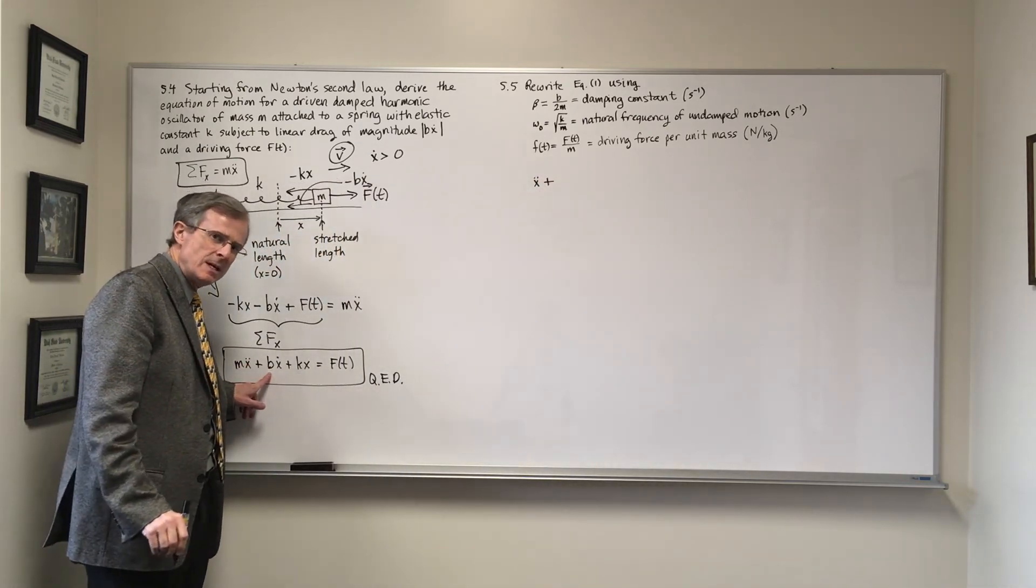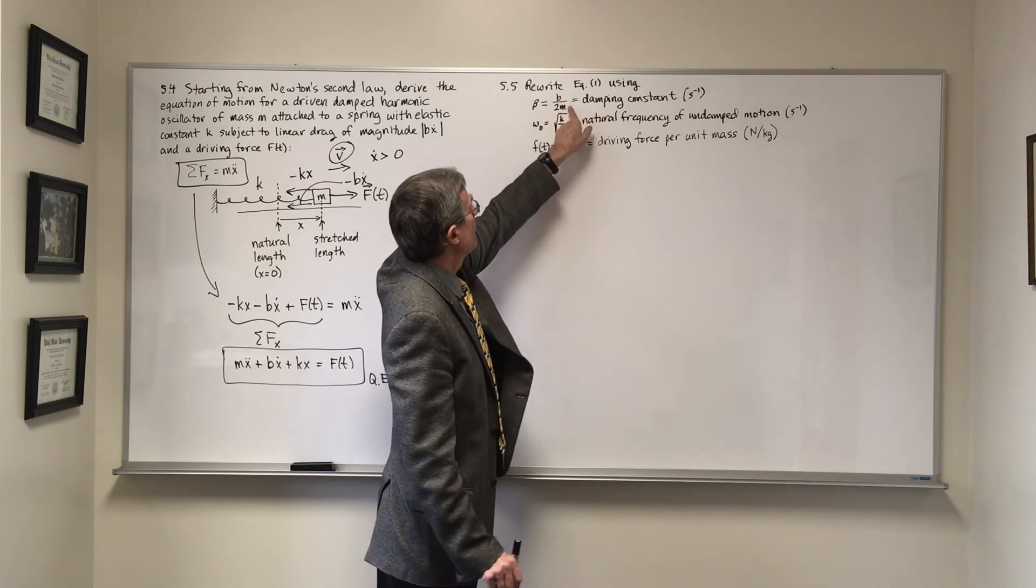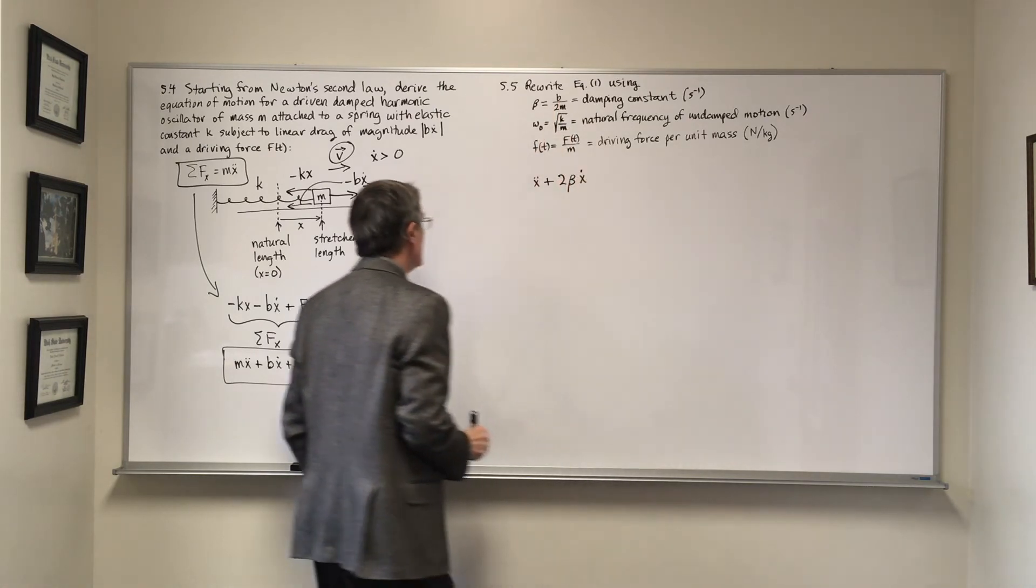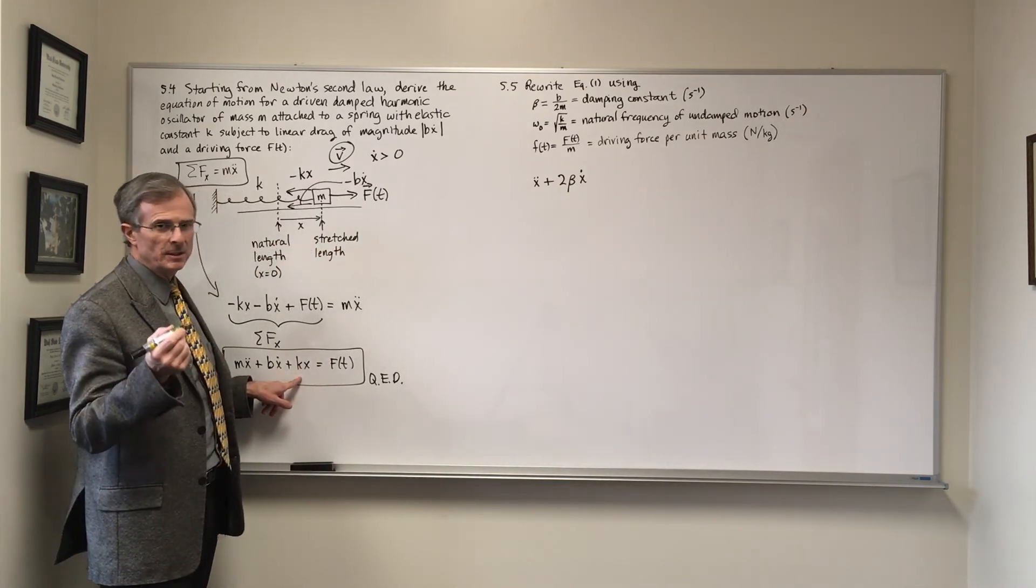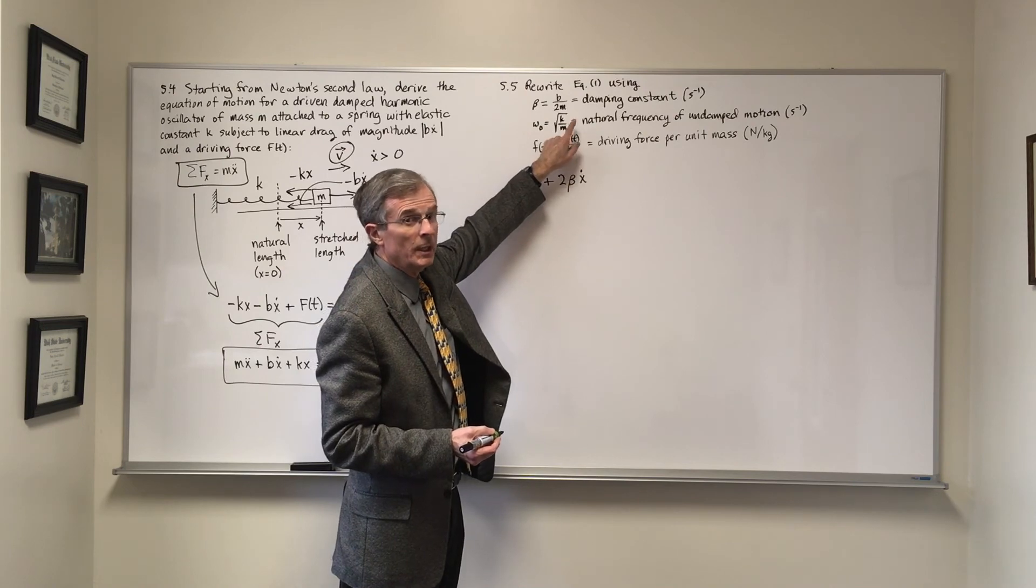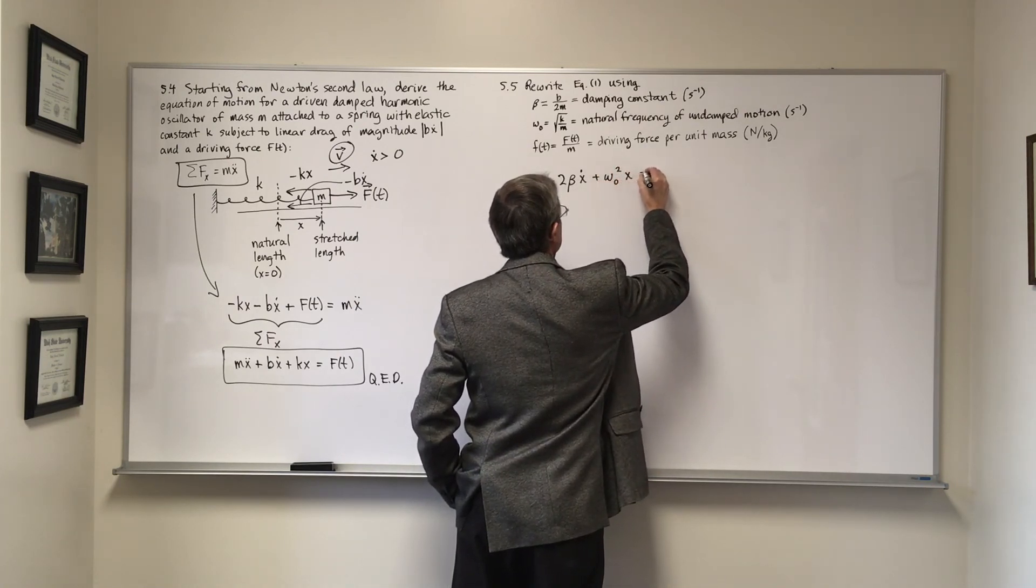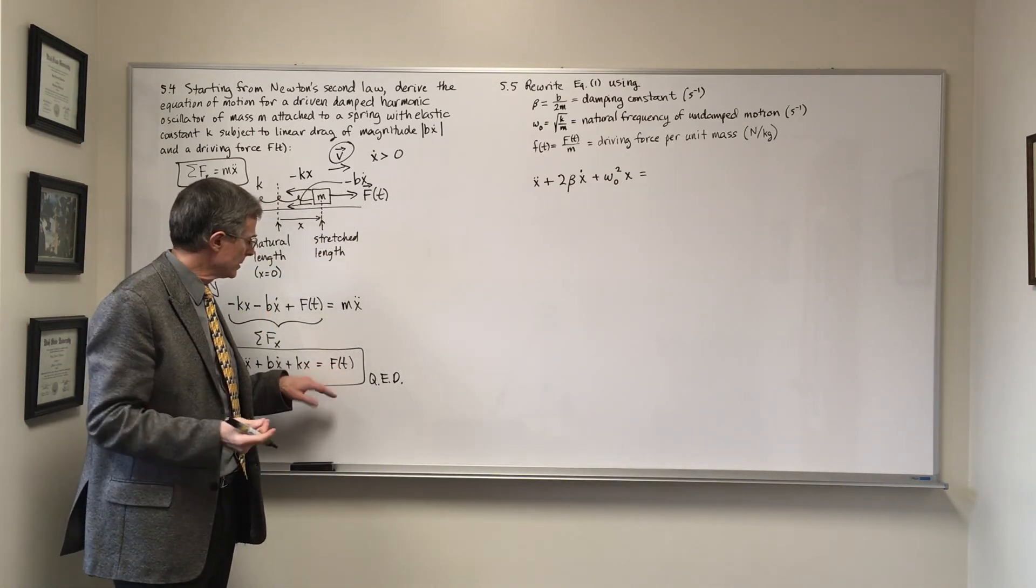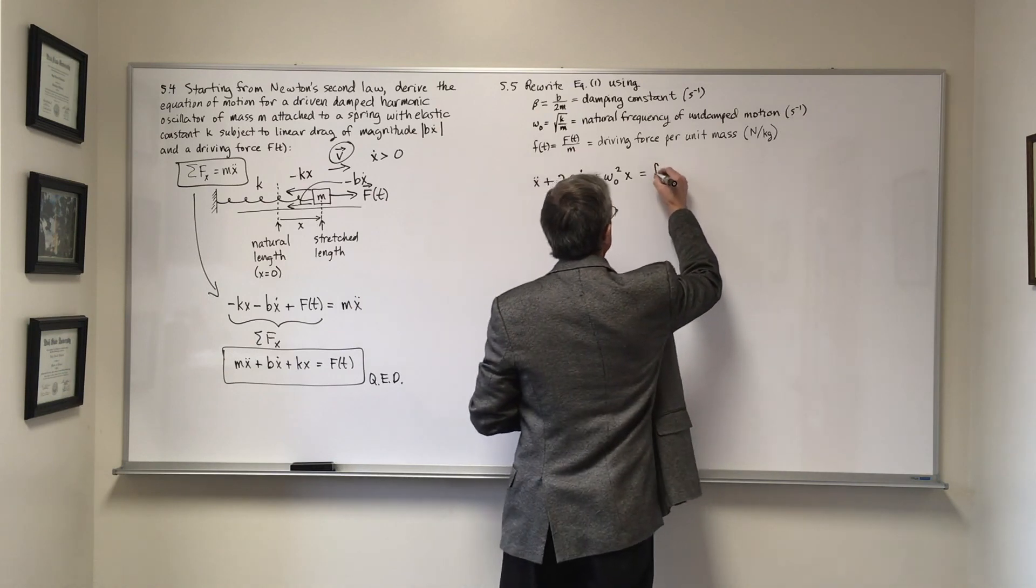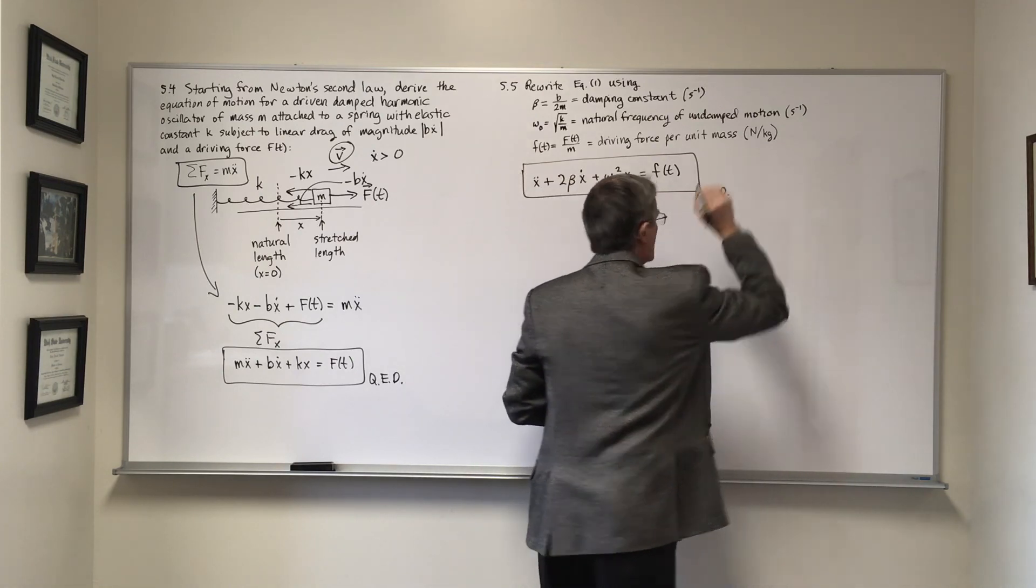This term becomes B over M, and from this equation, B over M is two beta. Then finally, K over M—well, that's starting to look like the natural frequency right here. So if we square this equation, we'll get omega not squared equals K over M, and K over M is exactly what we have here. Then finally, we have F, the driving force divided by M, and that's just by definition the driving force per unit mass, little f. And that's the end of that one.